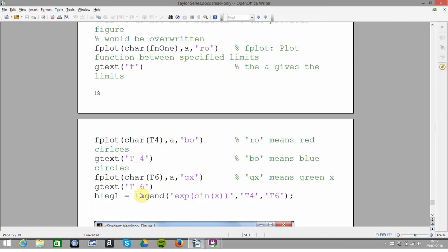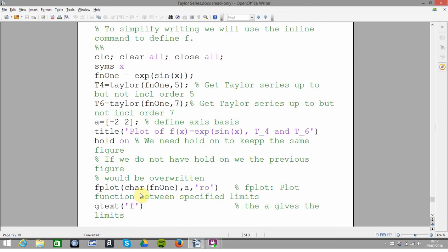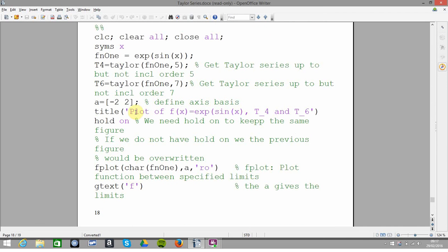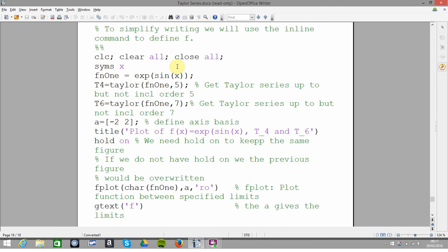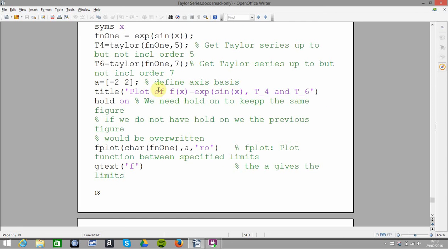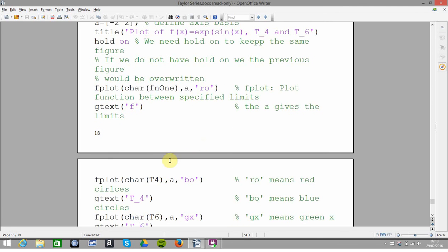So how did I do that? So there's my order four, six, my minus two to plus two, fplot. Now r-o means plot in red and using a round circle, a zero, as a marker.